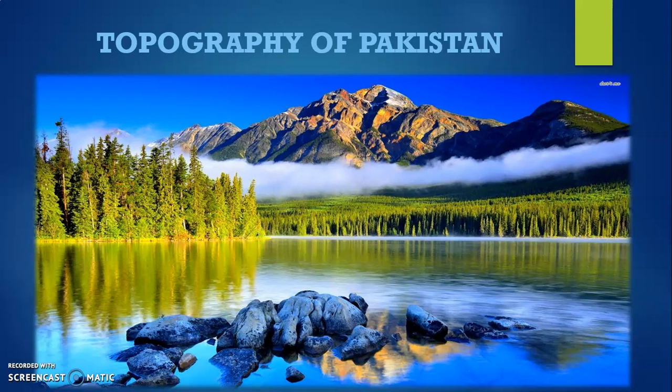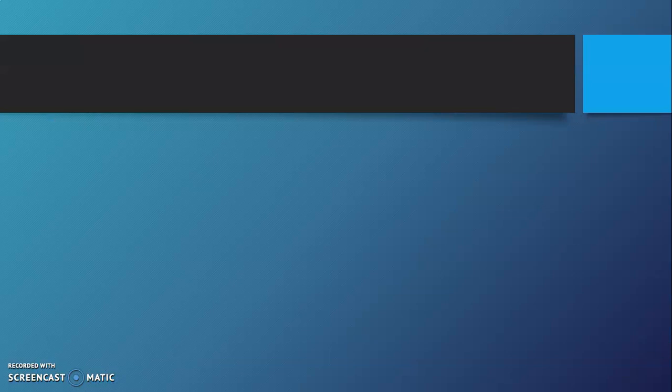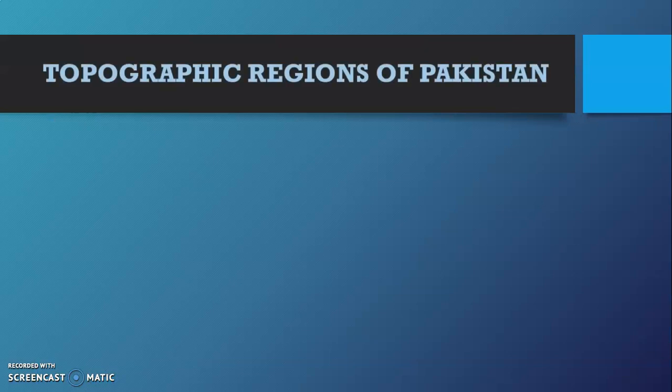Before starting, let me clarify this word 'topography,' which is basically the combination of two words: topo, which means the surface, and graphi, which means study — so it means the study of surface. Mainly in this video I'm going to discuss about the topographic regions of Pakistan, and there are certain factors which are basically interlinked with these regions. So let's see first of all what regions we have in Pakistan.